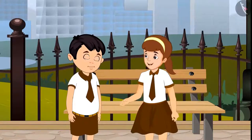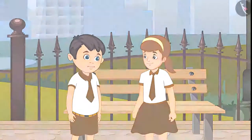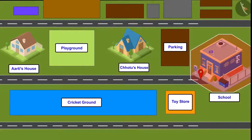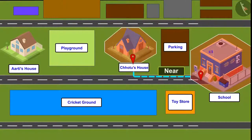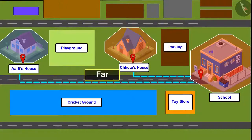Okay, now I understood, Chotu. So kids, did you see? Chotu's house is near the school and Aarti's house is far from the school. That is why it takes her more time than Chotu to reach home.